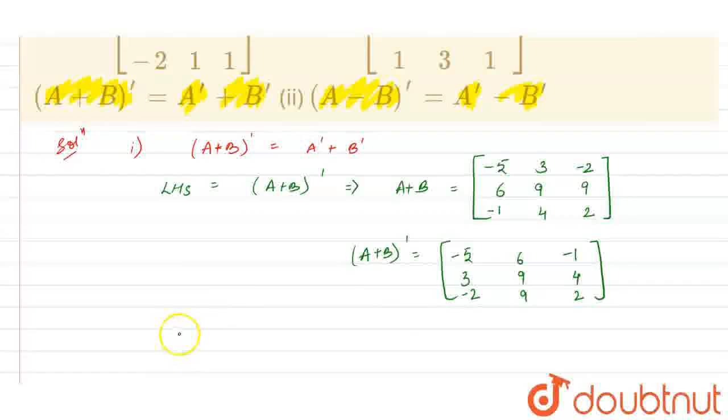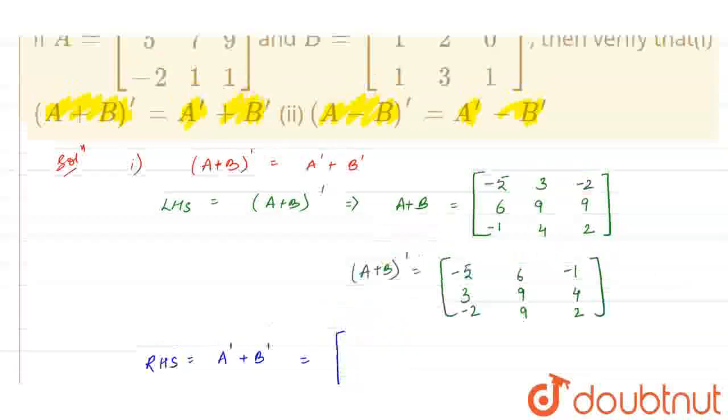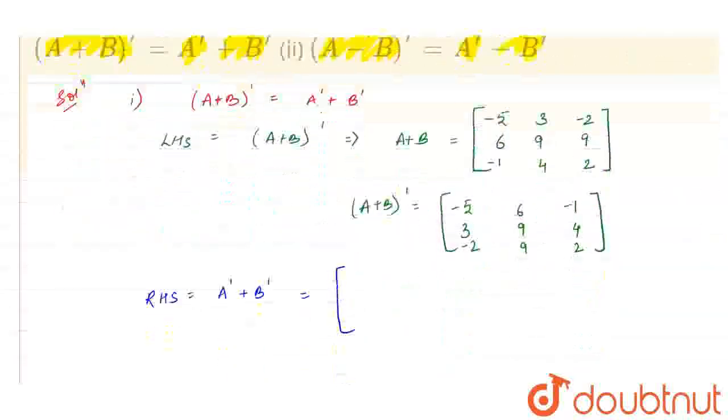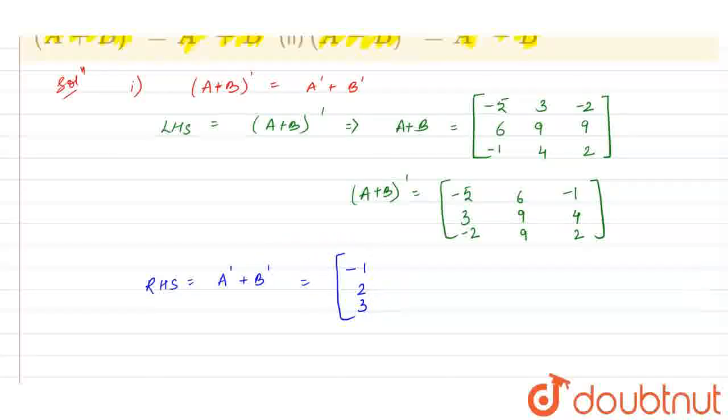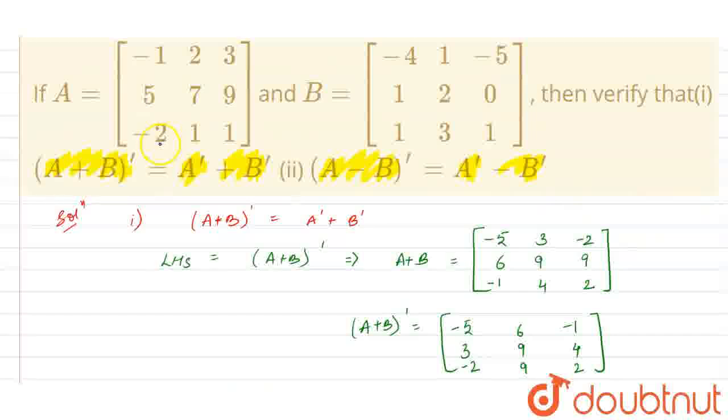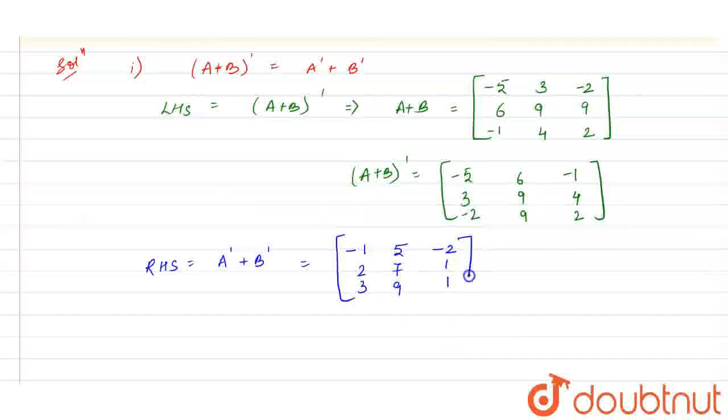Now for the RHS, we have calculated the value for LHS. Now for RHS, we need to add the A transpose into B transpose. So for the A transpose, let us calculate the A transpose. So this is the row and we will convert into the column. So our first column will be minus 1, 2 and 3. Our second column will be 5, 7, 9. And our third column will be minus 2, 1, 1.